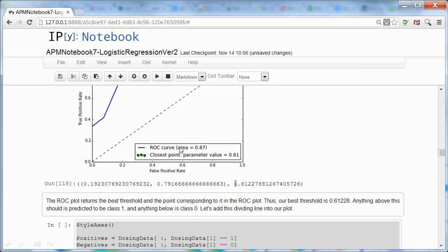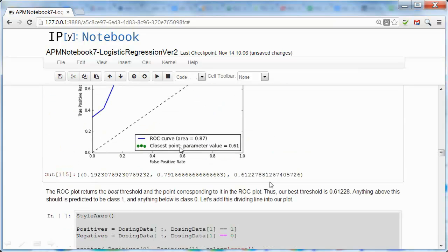And that corresponds to a parameter value of 0.61. And that 0.61 is our best threshold.